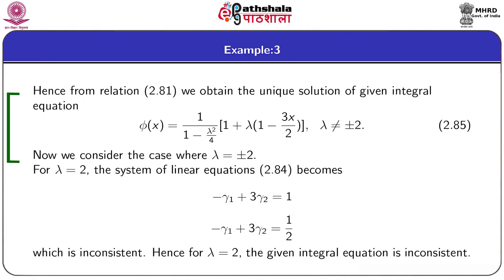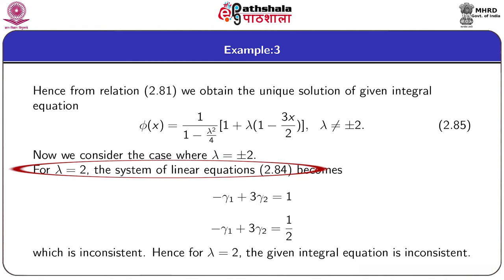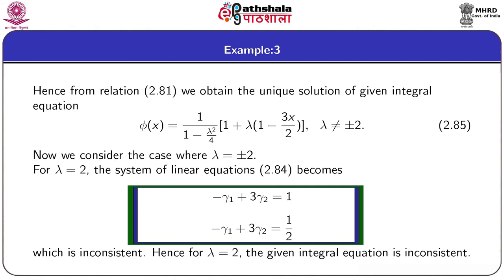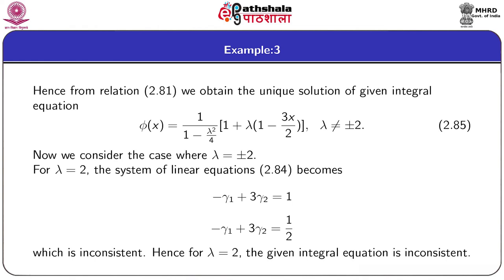Substituting γ1 and γ2 in equation 2.81, we obtain the solution of the given integral equation as given in 2.85, where λ ≠ ±2, giving the unique solution. Next, we consider the case where λ = +2 or λ = −2. For λ = +2, the system of linear equations from 2.84 becomes −γ1 + 3γ2 = 1 and −γ1 + 3γ2 = 1/2, which is obviously inconsistent.